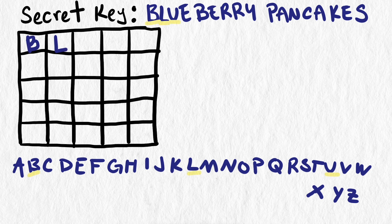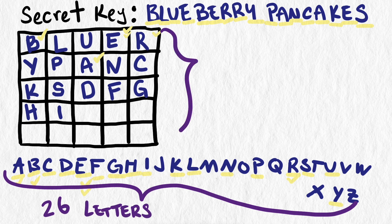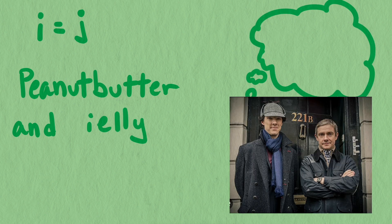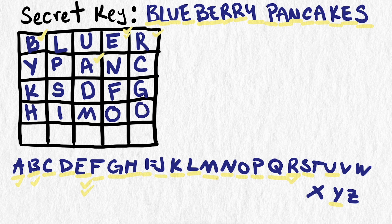So we start with B, L, U, E. Then, since B and E have already been used, we move on to R, then Y, P, A, N, C. Again, A has already been used, so we continue with K, pass the redundant E, and finally S. We then fill in the rest of the square with the remaining letters of the alphabet in alphabetical order, starting with D, then F, G, H, I. Note that there are 26 letters in the English alphabet and only 25 spaces in our 5x5 box, so Playfair's solution is to treat I and J as the same letter, trusting that any words using I in place of J could still be understood. We pick up again with M, O, Q, T, V, W, X, Z. Now we have our table.